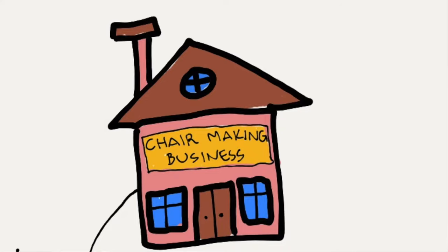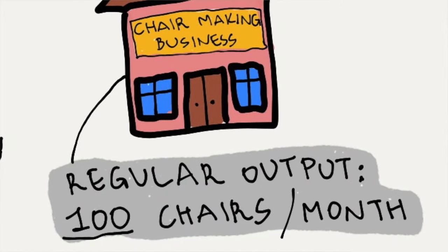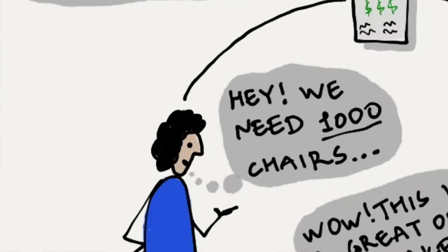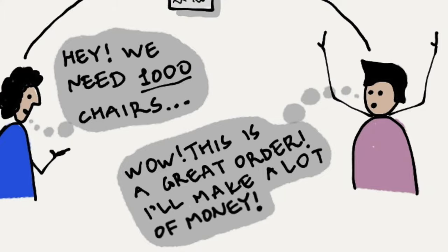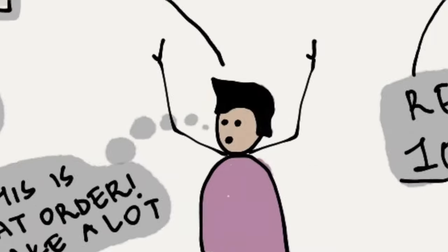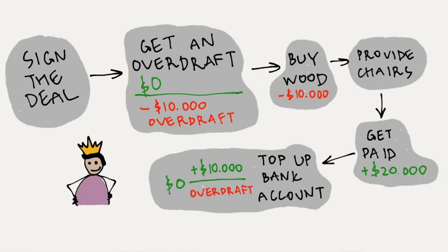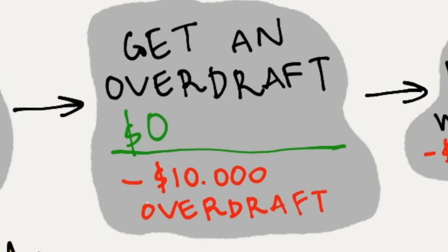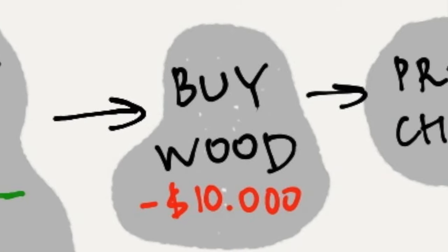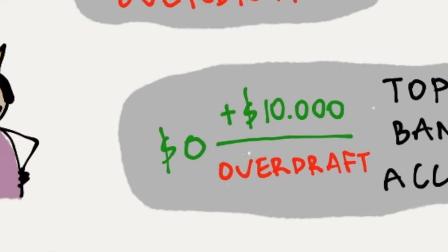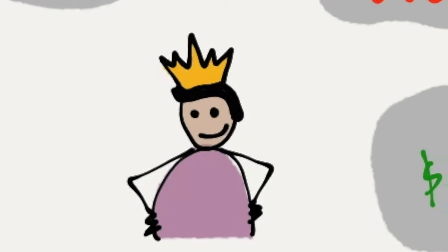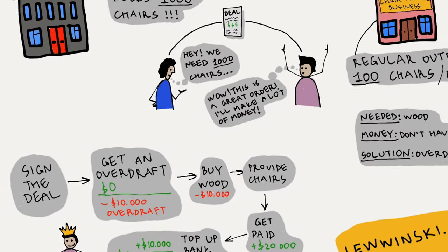For example, let's say you produce chairs and usually make 100 a month. A school approaches you needing 1,000 chairs — a great order — but you don't have enough money to buy the wood. However, once you sign the deal with that school, you know they will pay you. So you apply for an overdraft, buy all the wood you need, and once you deliver the 1,000 chairs and receive payment from your customer, you top up your bank account and pay back the overdraft.